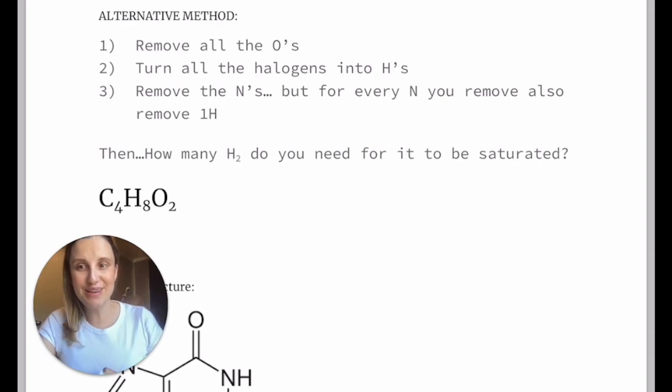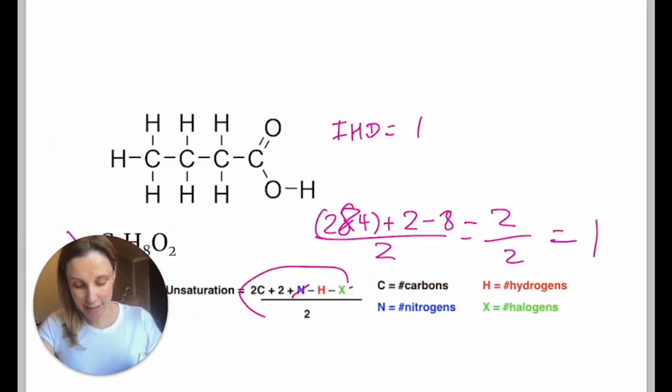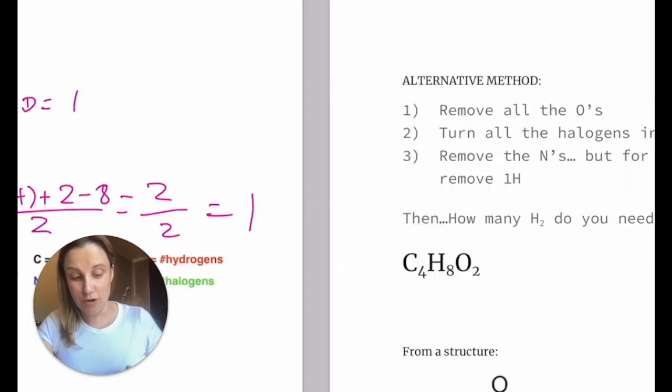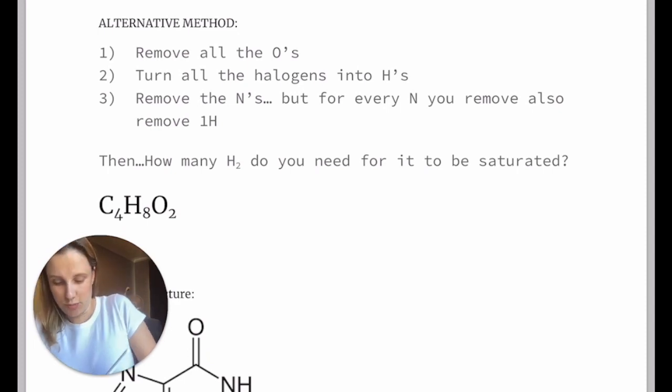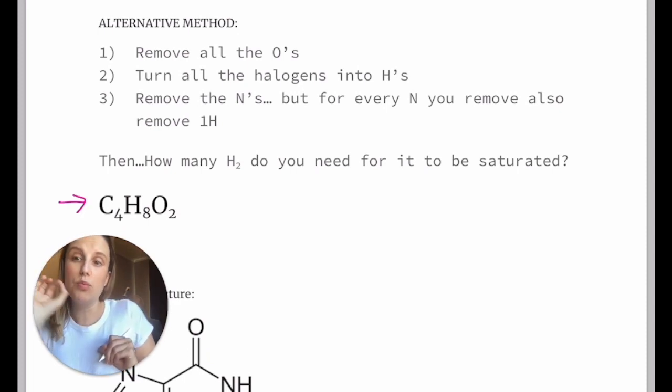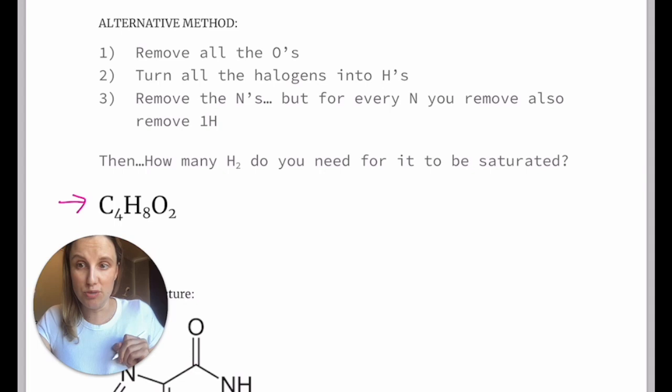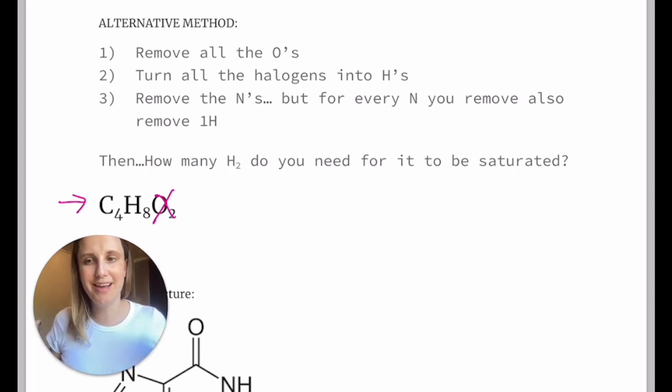So the process goes like this: remove all the oxygens. So the reason we start here is nobody cares about the oxygens. Let's just get rid of them because they're not affecting your IHD at all. So we're going to take all the oxygens away. We're going to follow the example we just did again using this process. So I'm going to remove the oxygens, turn all the halogens into hydrogens.